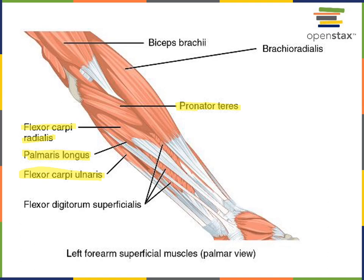You'll notice a pattern with the first letters of those muscles: pronator teres is P, flexor carpi radialis is F, palmaris longus is P, and flexor carpi ulnaris is F. A mnemonic to remember the order of those muscles — P, F, P, F — could stand for pass, fail, pass, fail. Or starting from the medial side: fail, pass, fail, pass. So those are the four superficial muscles on the anterior antebrachial region.